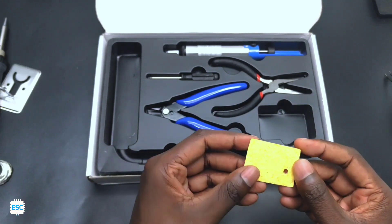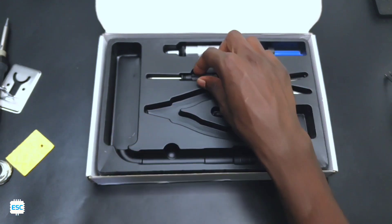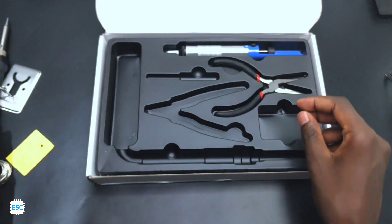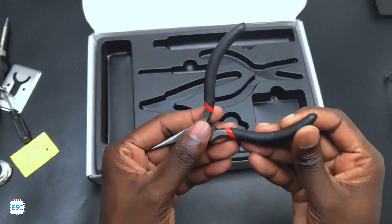Now we got a tip cleaner sponge, next we got a wire cutter, then a small screwdriver, next a desoldering pump and finally we got a nose plier.